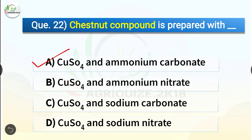Chestnut compound was suggested by Bewley in 1921. It contains two parts of copper sulfate and eleven parts of ammonium carbonate.